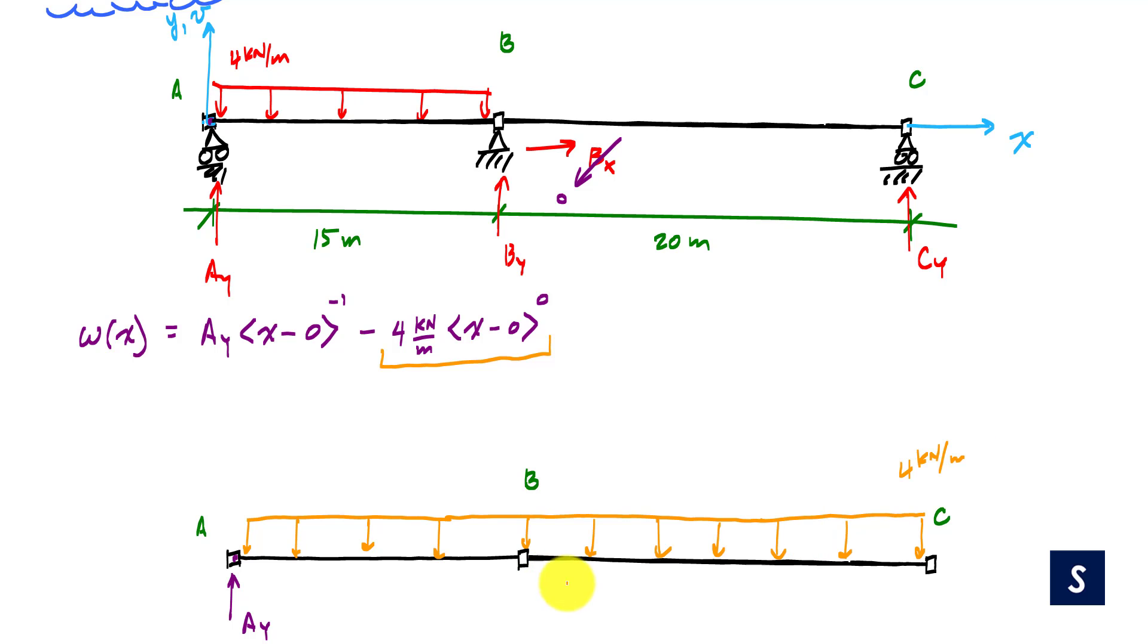What I need is for span BC to be zero. So I need an offsetting uniformly distributed load. I need a uniformly distributed load of four kilonewtons per meter like this in order to reflect what's actually happening. What I'm going to add mathematically is I'm going to add a positive four kilonewtons per meter, X minus. Now this starts, this pinkish load at the bottom here starts at X equals 15 meters. So X minus 15 meters to the zero power. And that's going to give me the zero loading on the span BC.